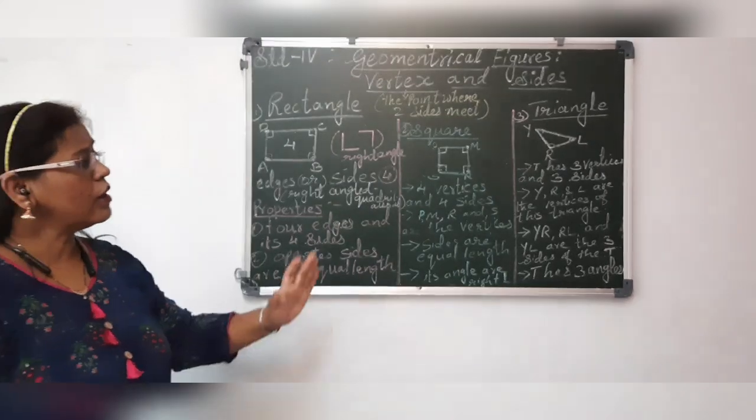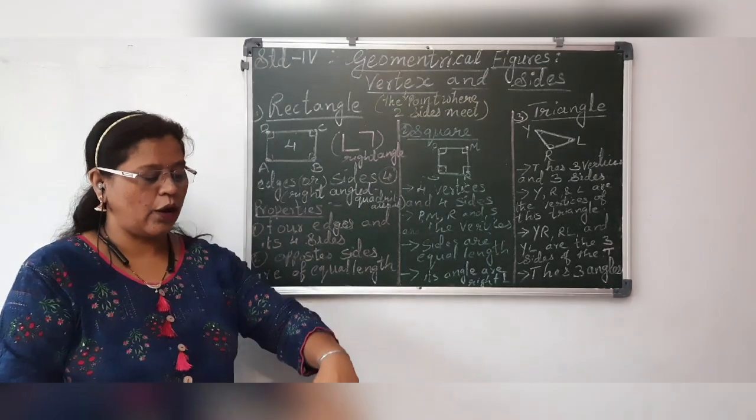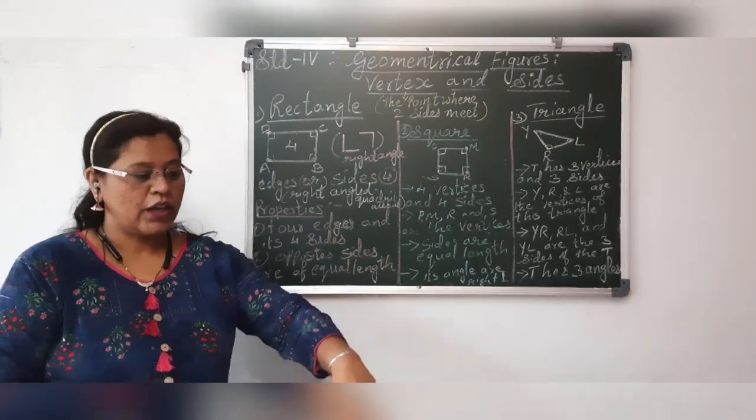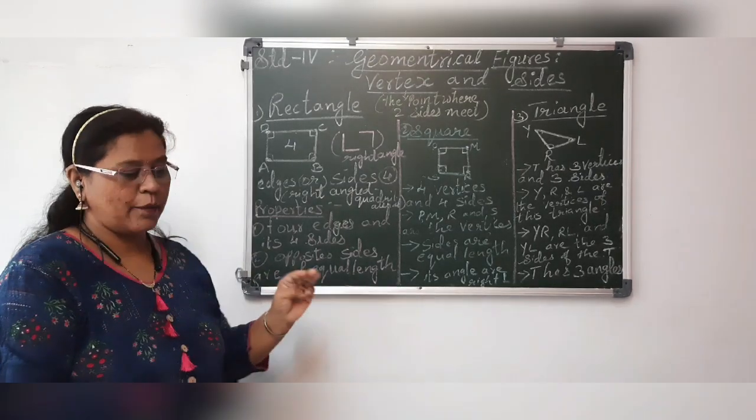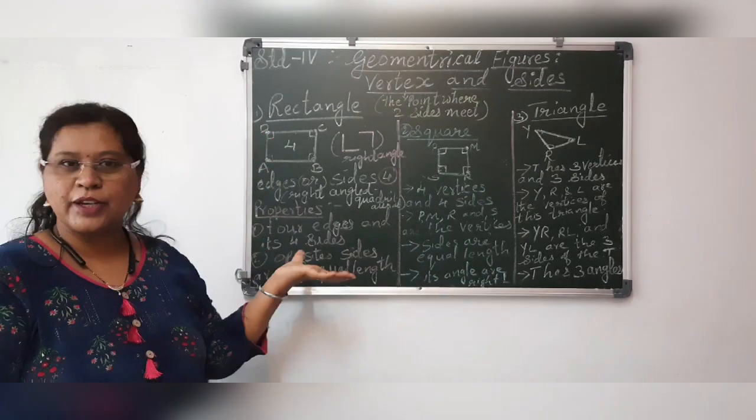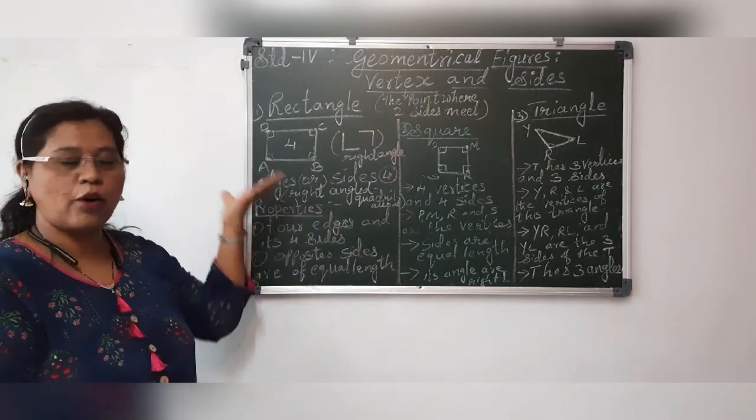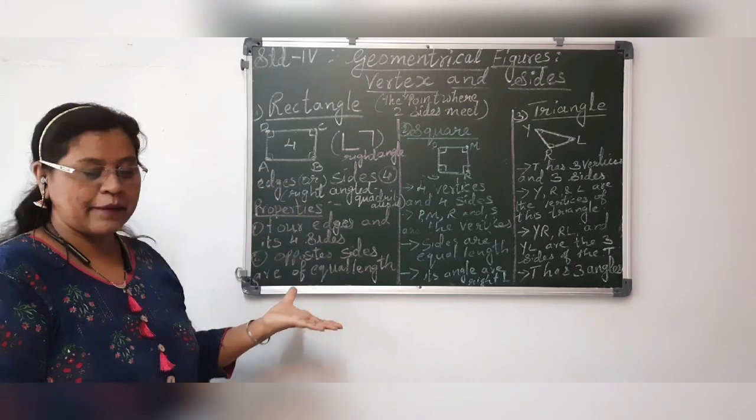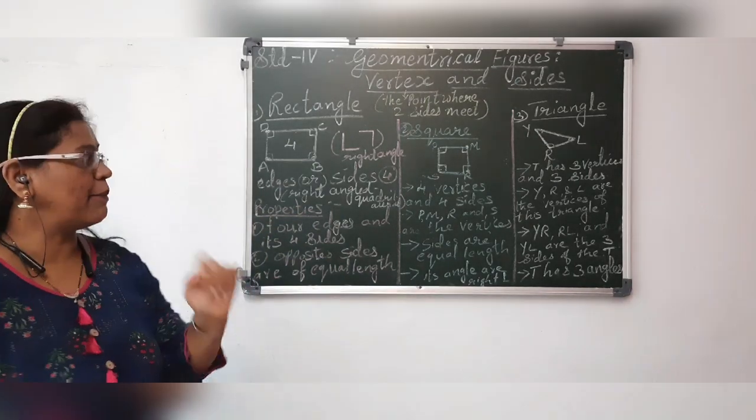So in this, on page number 6, your max textbook, there are three shapes. Geometrical shapes are given and the information, the properties, what are the properties of these shapes are given. So we are going to learn about it.